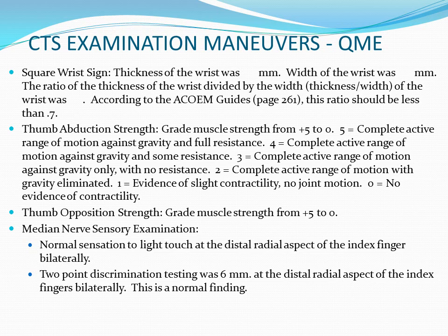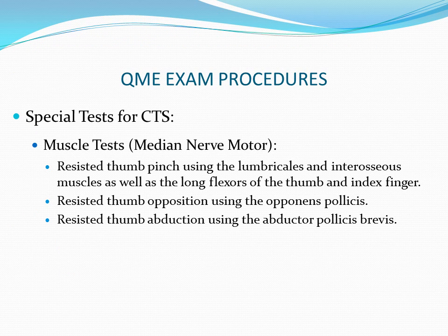With that information in mind, we will now begin our discussion of permanent impairments of the radial, median, and ulnar nerves as described in the AMA guides, Chapter 16, pages 480 and 493.